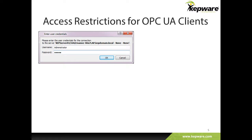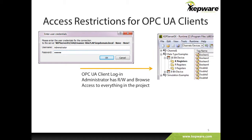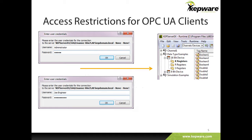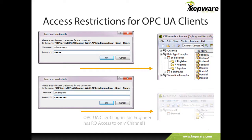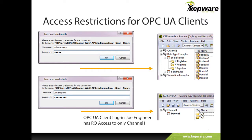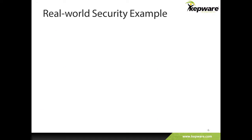For example, if an administrator accesses the server via OPC UA, they would be able to read, write, and browse everything within the server. Compare that to OPC UA user Joe Engineer, who has read-only access to a single device.